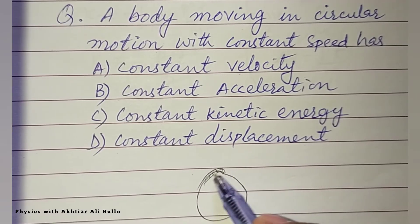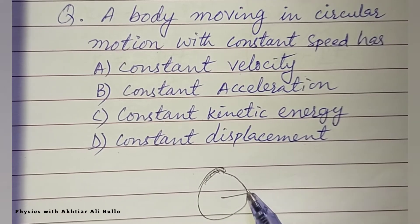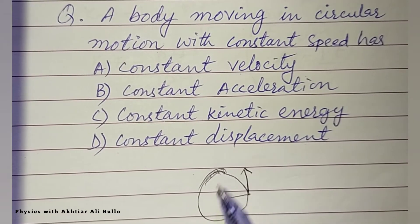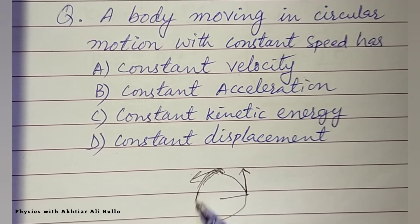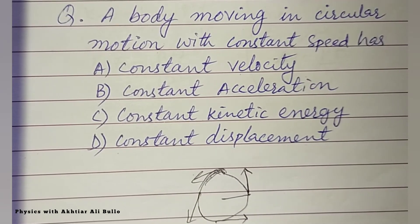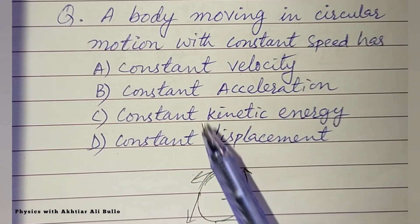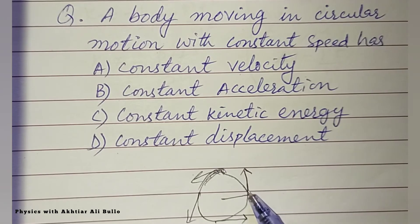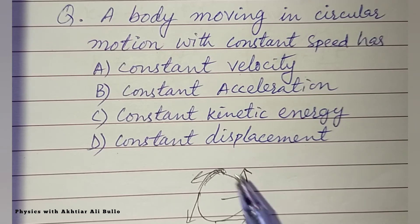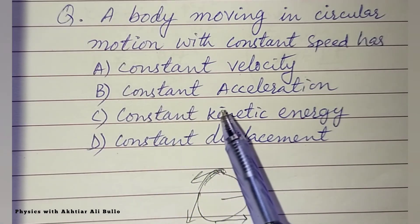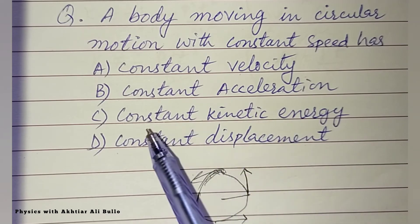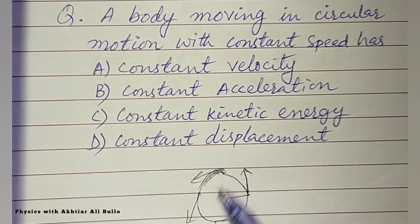In circular motion, the velocity is along the tangent line. Since the direction of the tangent line changes at every point, velocity does not remain constant. Acceleration is also possessed by the body along the tangent line in circular motion, so acceleration will also be variable. Therefore, option (b) will not be correct.